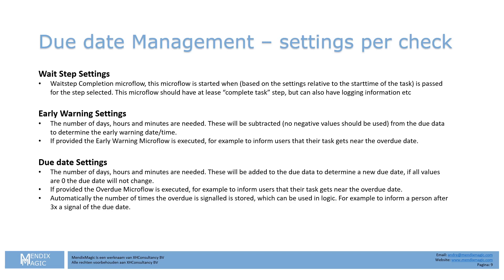The wait step settings let you define days, hours, and minutes since the start of the task. It's calculated at the moment the overdue process runs, not when the wait step is generated. So if you change a definition from 60 minutes to 30 minutes it takes effect dynamically — it checks based on the settings at that moment in your overdue management settings rather than a fixed due date set at creation time.